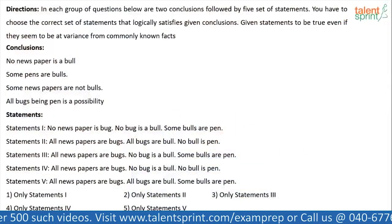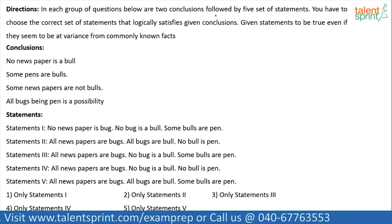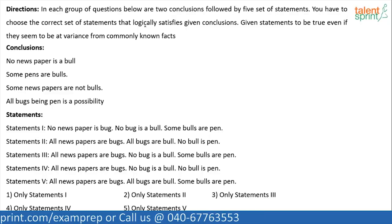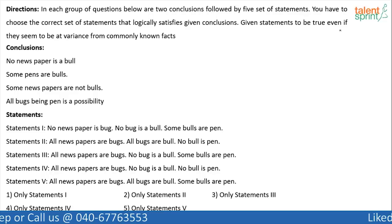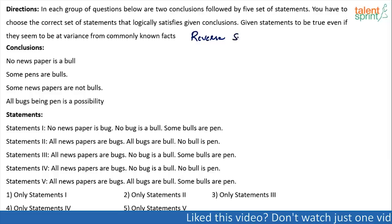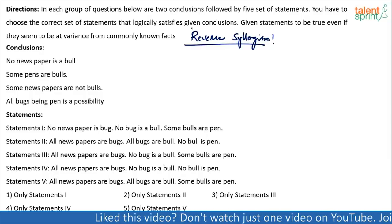Let's start. There are three questions on syllogisms — in fact, reverse syllogisms. The first one is on your screens. In each group of questions below are two conclusions followed by five sets of statements. You have to choose the correct set of statements that logically satisfies the given conclusions. Given statements are to be taken as true even if they seem to be at variance from commonly known facts. This is the typical reverse syllogism which was introduced last year in bank exams.